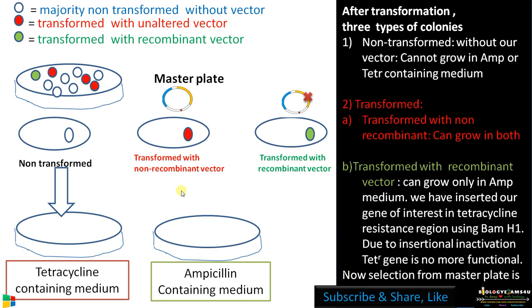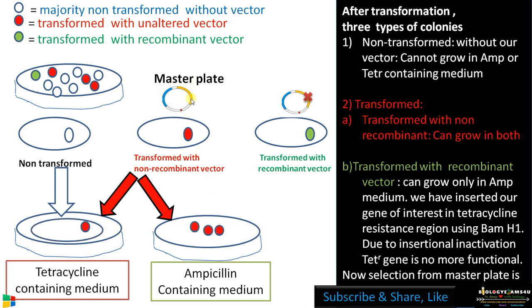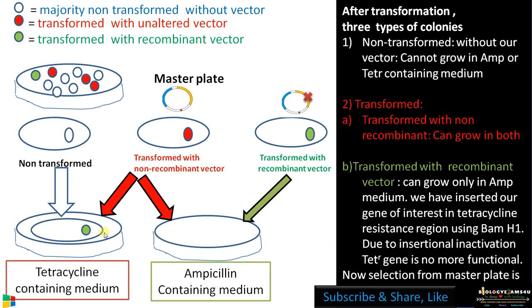In the case of non-transformed colonies, since they don't carry the vector, they cannot grow in either tetracycline or ampicillin containing medium. For colonies transformed with non-recombinant vector, they can grow in both tetracycline and ampicillin media, as both resistance genes are intact and unchanged. For colonies transformed with recombinant vector, they can grow in ampicillin medium — since that region is intact — but cannot grow in tetracycline medium, as it is inactivated by insertional inactivation.